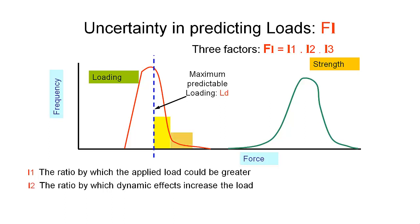The second one is the ratio by which dynamic effects might increase the load. If we take a hammer and hit something with it, then the load is going to be much greater than if we just rest the hammer on top of it. And so these dynamic effects can increase the load quite significantly. The same goes for, say, a car suspension. When the car is sitting statically, we might know what that load is, but when we drive over a bump, that load could be increased dramatically and so we have to account for that in certain circumstances.